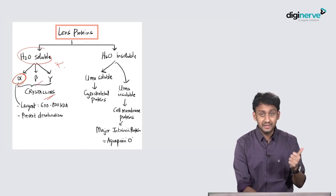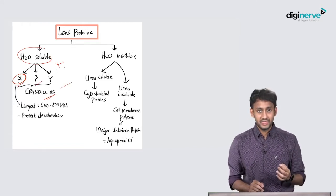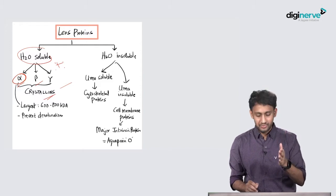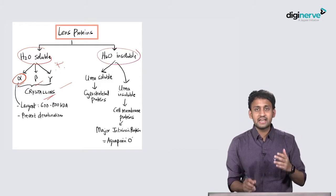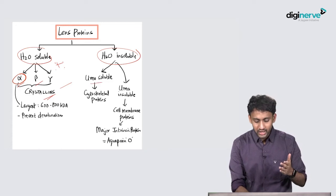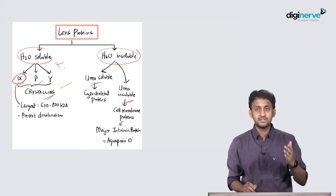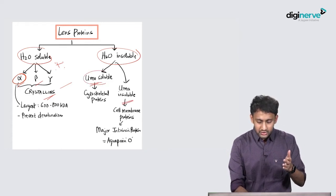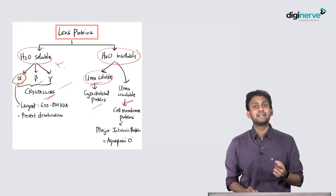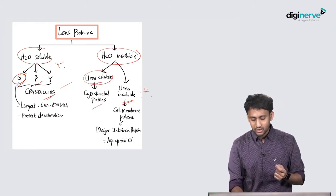The water insoluble can be classified into urea soluble and urea insoluble. The urea soluble proteins are the cytoskeletal proteins, whereas urea insoluble proteins are the cell membrane proteins.